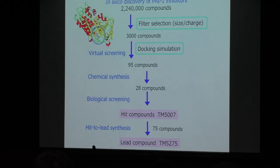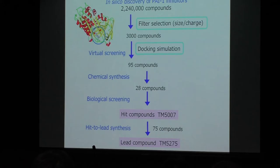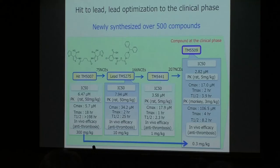Let me focus on the PAI-1 inhibitor project. We screened a virtual chemical library encompassing more than two million compounds. This number was reduced by several filter selections: size filter, drug-likeness filter, and charge filter. These compounds were then evaluated by docking simulation to assess whether a compound fits in the active pocket of PAI-1. We identified 95 compounds theoretically binding in this active pocket of human PAI-1, purchased or synthesized 28 of them, tested their biological activities in vivo and in vitro, and eventually identified the hit compound TM5007.